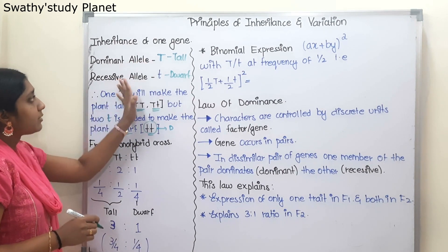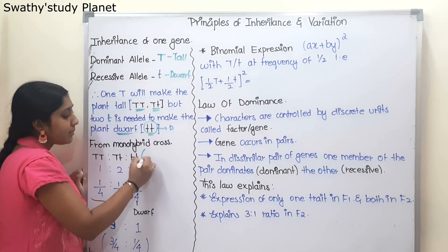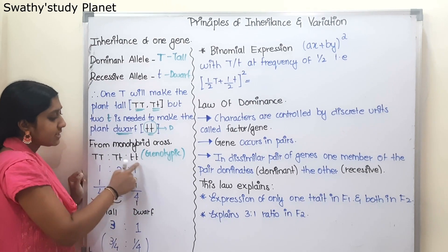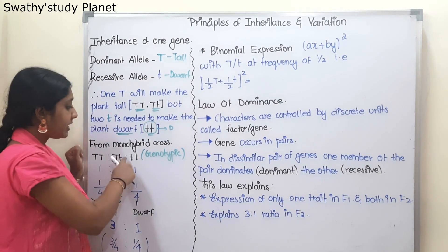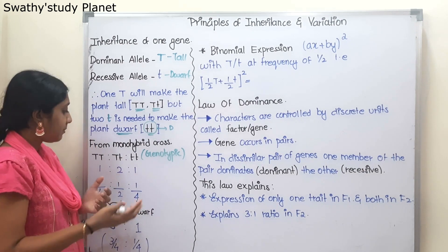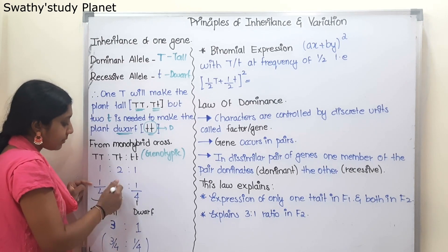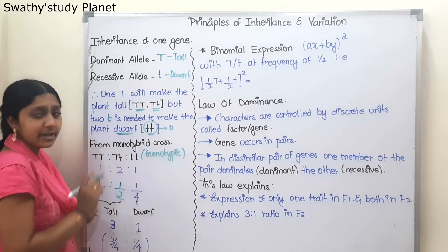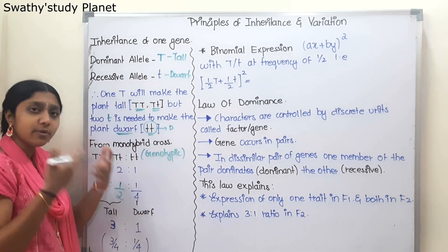Now let's go to the monohybrid cross. We have two ratios: genotypic ratio and phenotypic ratio. The genotypic ratio is based on genes — TT, Tt, and tt — giving us 1:2:1. In fraction formula: 1/4, 2/4 (which cancels to 1/2), and 1/4. So 1:2:1 is the same as 1/4 : 1/2 : 1/4.